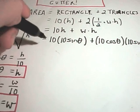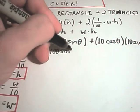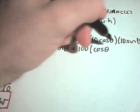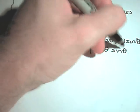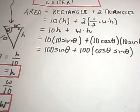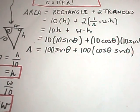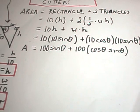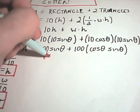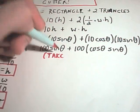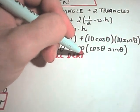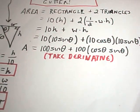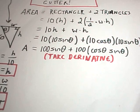If we simplify this down, it looks like we get 100 sine theta plus 100 cosine theta times sine theta. And this is now the thing that I am basically trying to maximize, which means we now have to take a derivative of it. So now we'll take the derivative, try to find critical points, justify that those are a maximum, and we'll have the angle at which we need to bend our gutters.